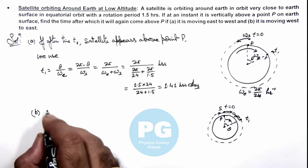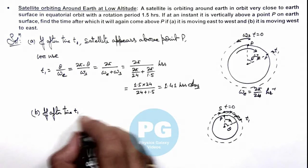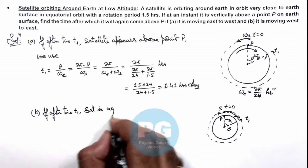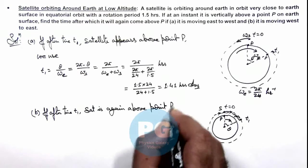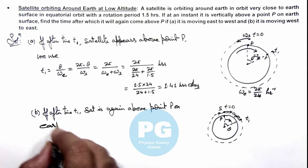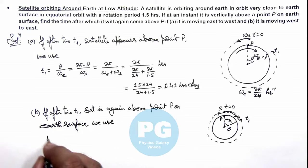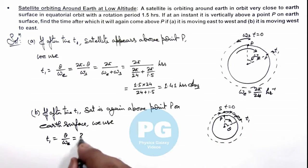So we can say if after time t₁, satellite is again above point P on Earth surface. Here we use time t₁, now we can write as θ/ωₑ is the time taken by Earth, and satellite has revolved 2π+θ, so we can write it as (2π+θ)/ωₛ.